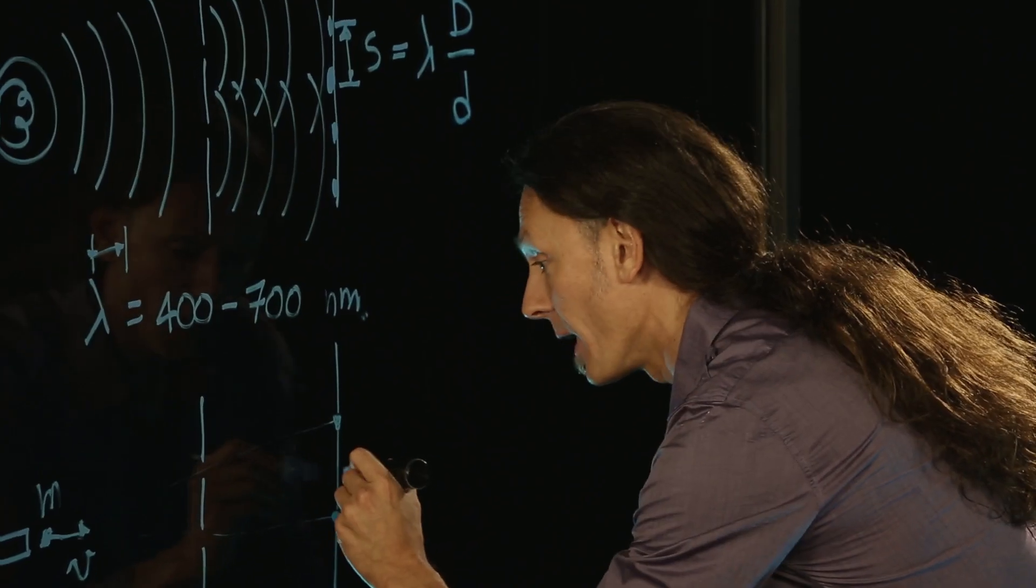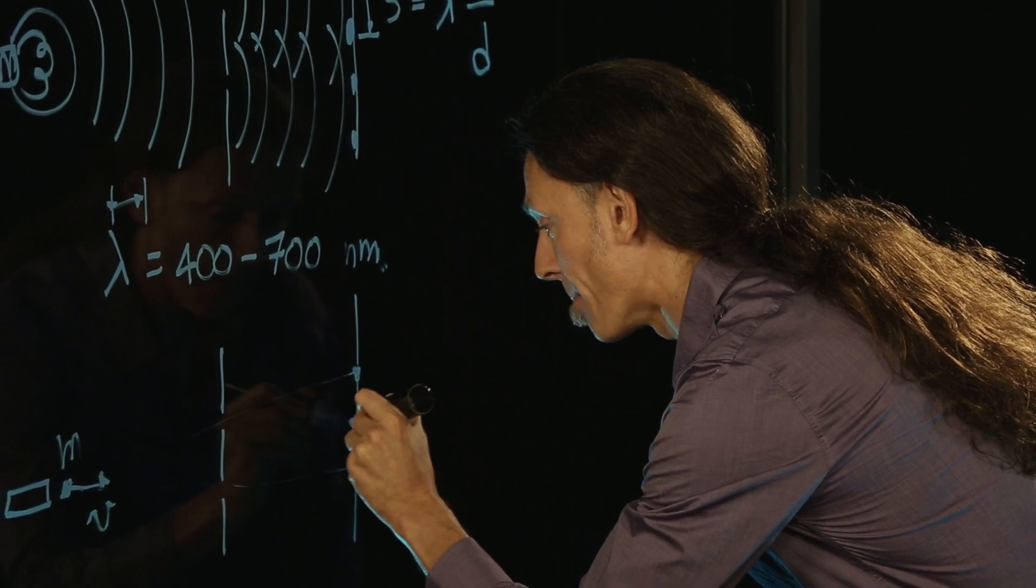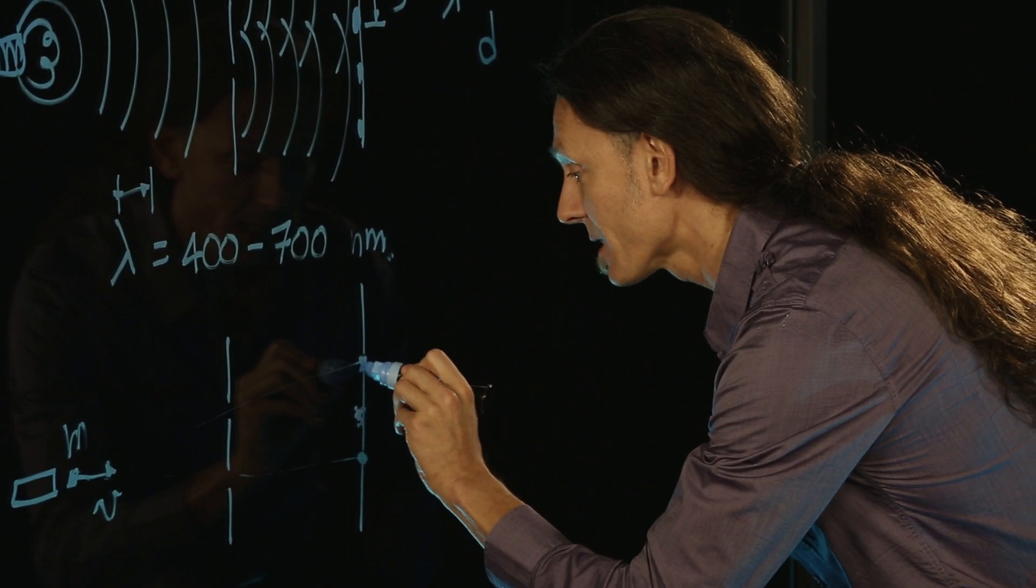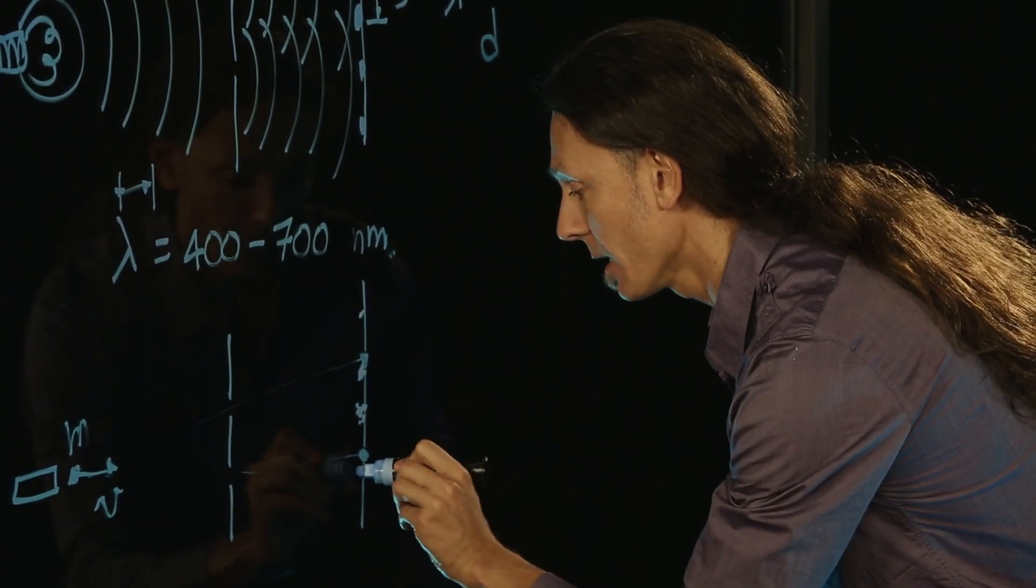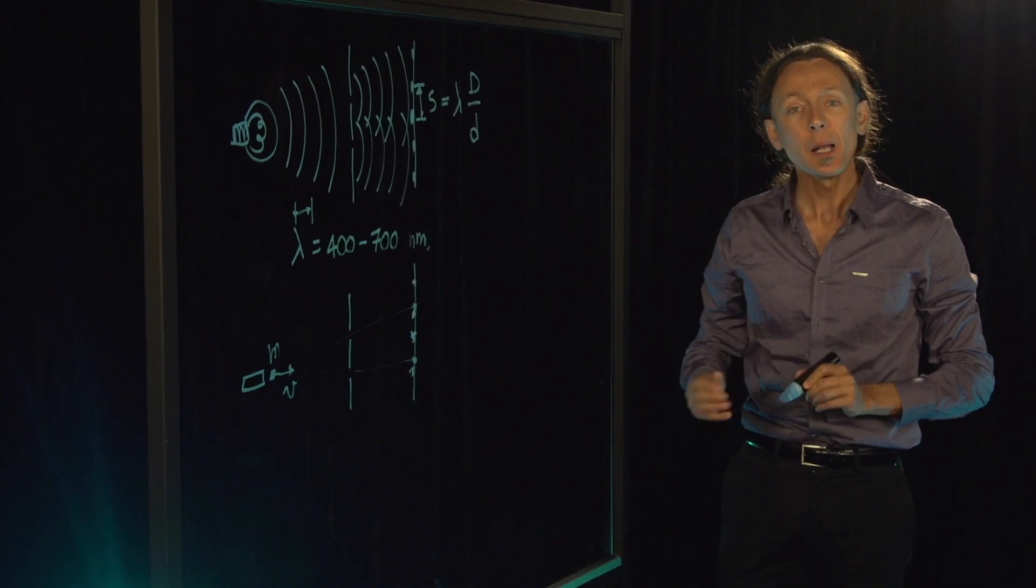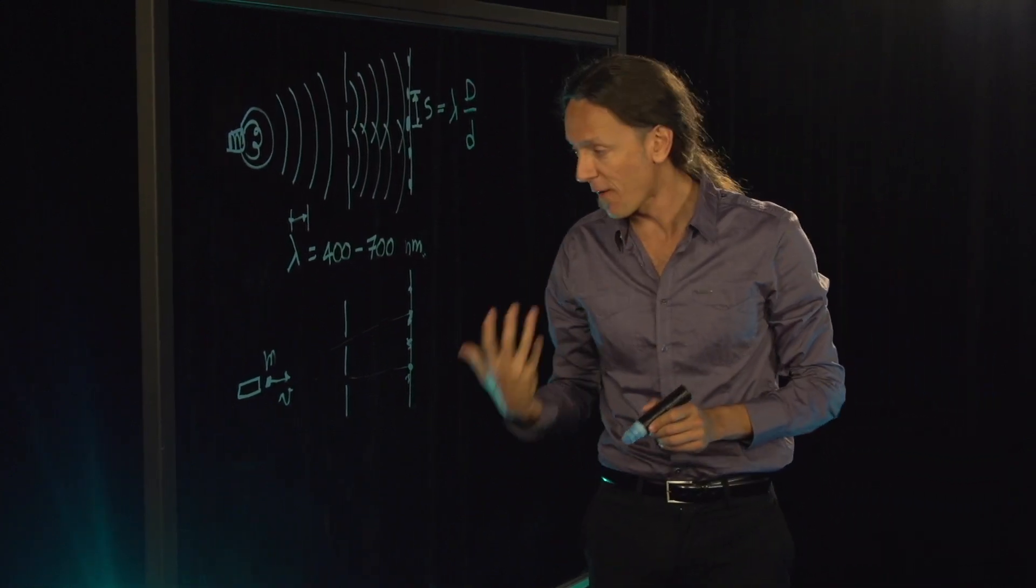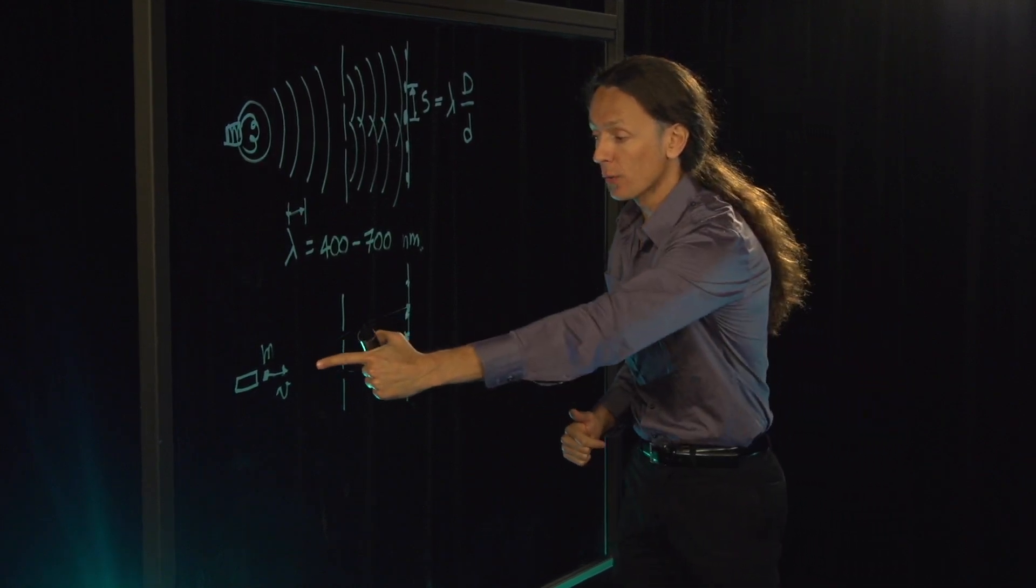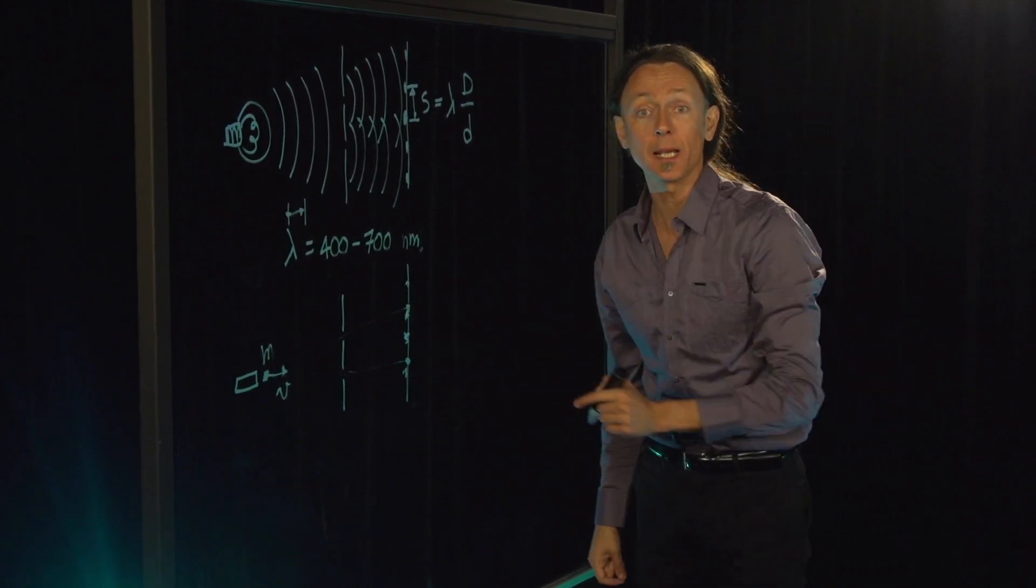So you will find many protons amassing themselves in the middle behind this screen here and then some others here and then some others here and some others there and so on. The same pattern as you see with light. But this has actually a very profound meaning. What it means is that the proton has gone through both slits.